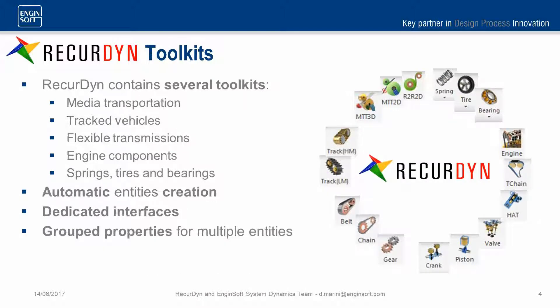RecurDyne contains several toolkits. For example, there are toolkits for median transportation, for tracked vehicles, for flexible transmissions, and many others, as you can see. They all grant the possibility to automatically create several entities of the model and to group them with dedicated interfaces in order to reduce the time required to create the model and to set up its parameters.